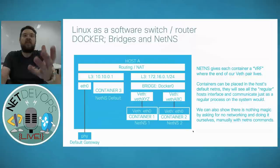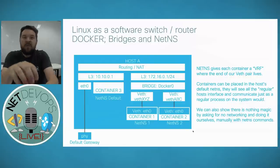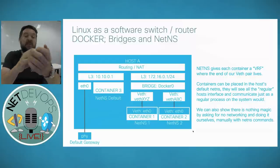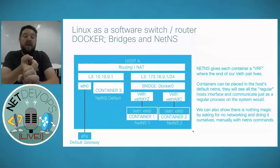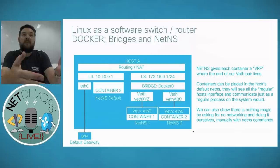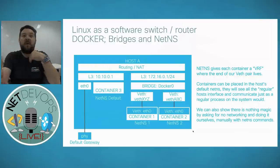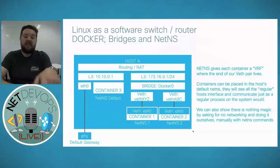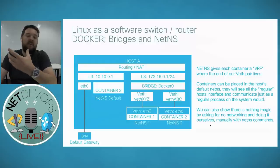Hopefully that shows what the only important things to grasp with container networking really are: there's nothing magic. It's regular veth pairs talking to regular layer 2 bridges done in software on the Linux host. That script is there for you — you can do all container networking manually instead of having Docker do it, and it works exactly the same. The names Docker generates are more intricate and dynamically generated, but the fundamentals are the same.